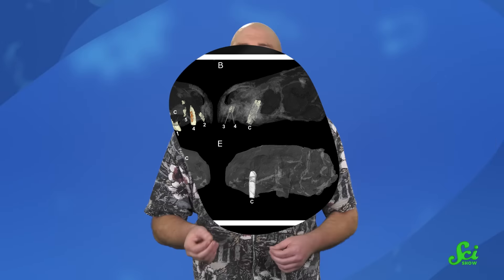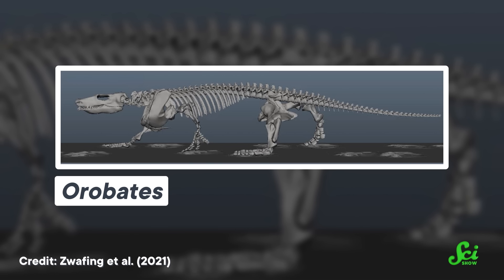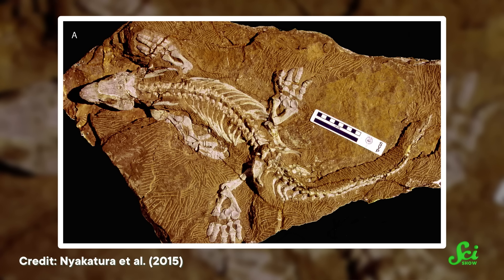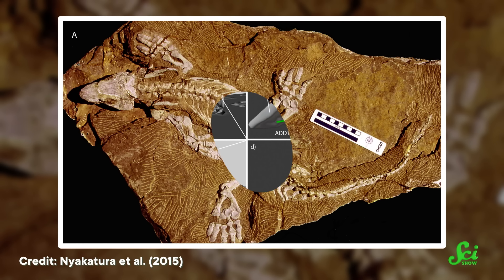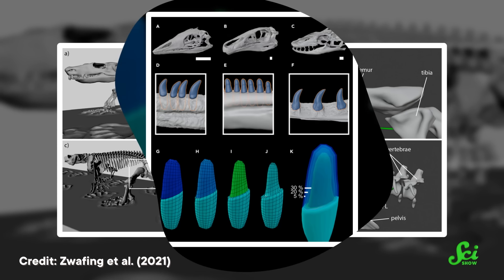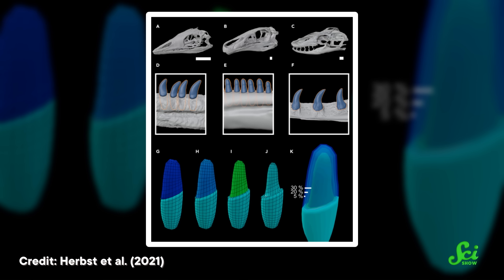Not only do virtual fossils help researchers retire some destructive methods, but they make it possible to run all kinds of experiments that aren't possible with physical fossils alone. For instance, researchers can experiment on the digital model of a fossil to figure out how the organism might have moved when it was alive. One 2019 paper investigated the movements of an ancient tetrapod called Orobates, which lived in the Permian between 280 and 290 million years ago. They used scans of an incredible fossil to simulate the range of motion at each joint, then compared that information with fossil footprints, which told them exactly how this animal would have been able to move and walk hundreds of millions of years ago.